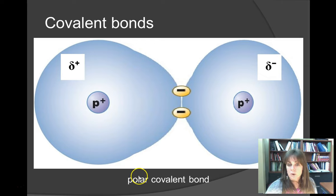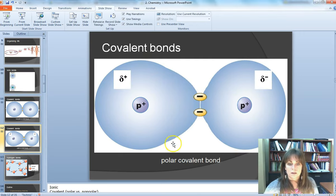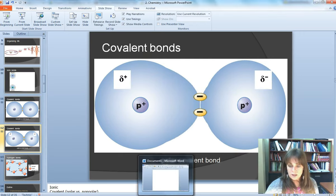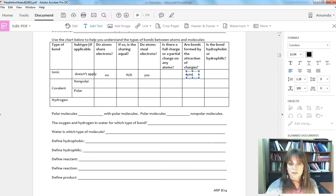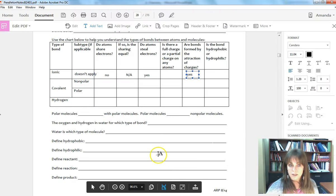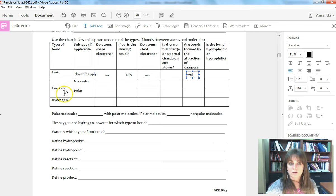So this is a polar covalent bond, and this molecule is called a polar molecule, and it will have partial charges. Now let's go back to our chart here and fill out some information.